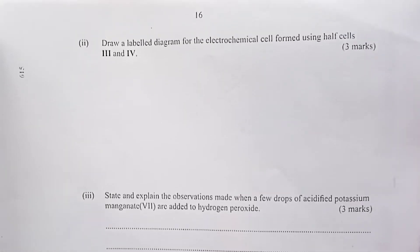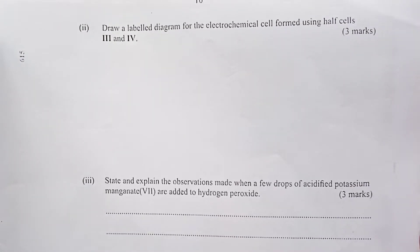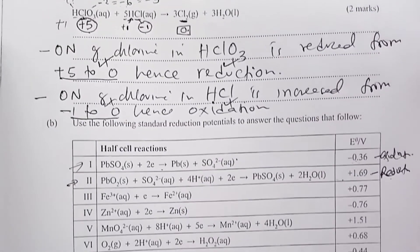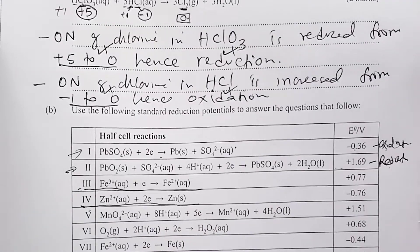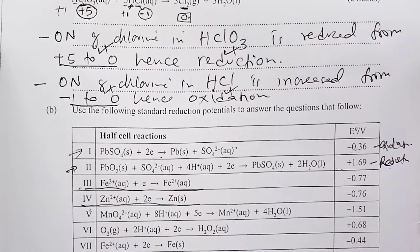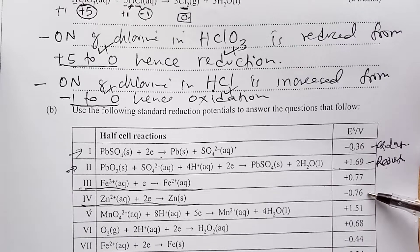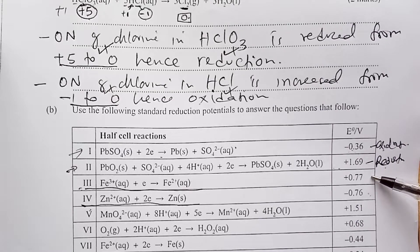We have been asked to draw a labeled diagram for the electrochemical cell formed using half cells 3 and 4. Half cell 3 is Fe3+/Fe2+ and half cell 4 is zinc. In chemistry, we insist the half cell that has undergone oxidation should always be on the left-hand side — that is the one you start with. So zinc would be the half cell we draw first, followed by ion 3, and we shall put in a salt bridge in between.